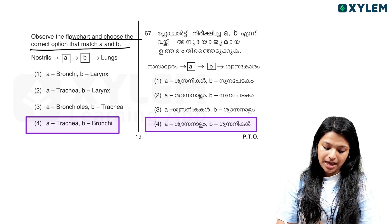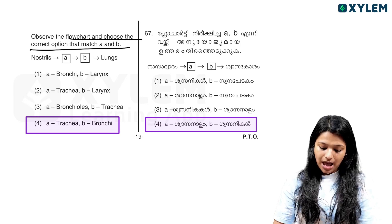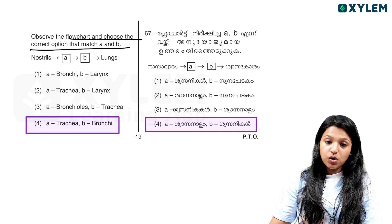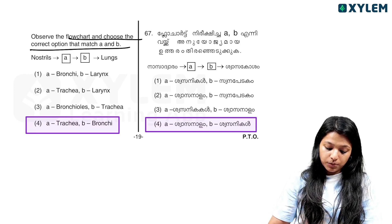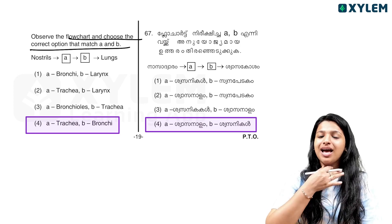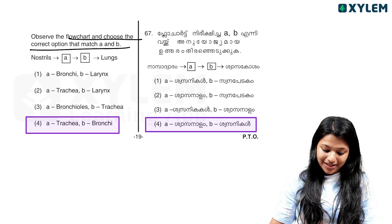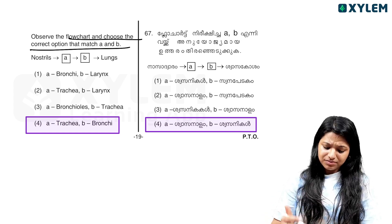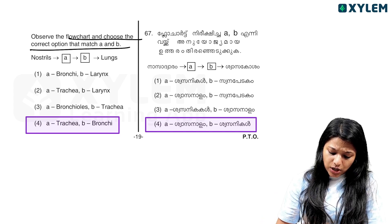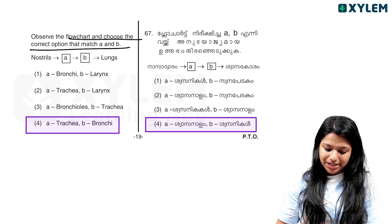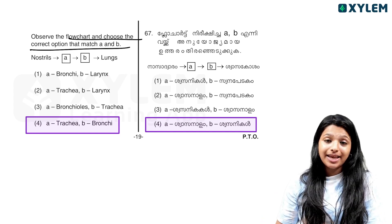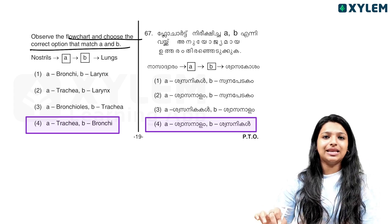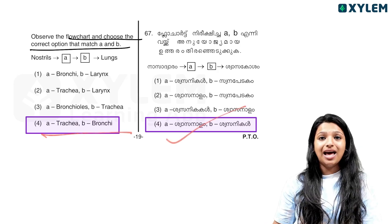Choose the option that matches A and B. Option A plus B. Now notice the options. When you start with skin, how about A? You can handle something in the trunk. The options are bronchial, larynx, or tracheal. The correct option is option 4.